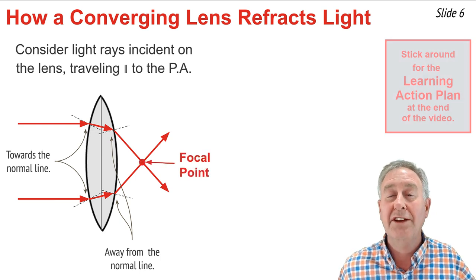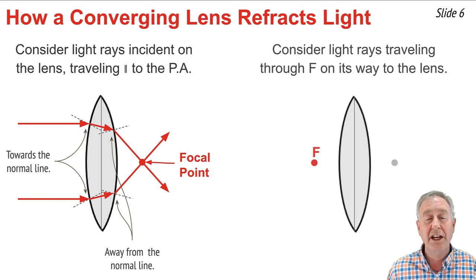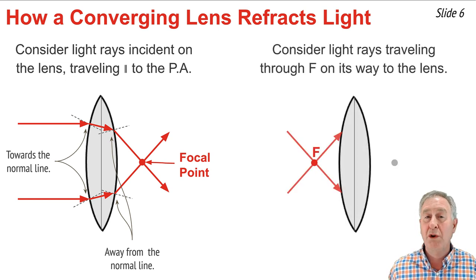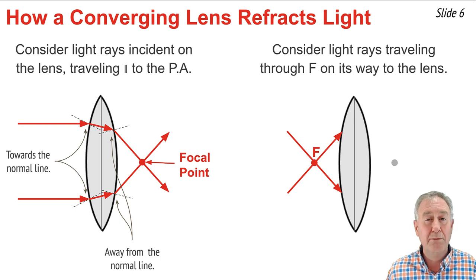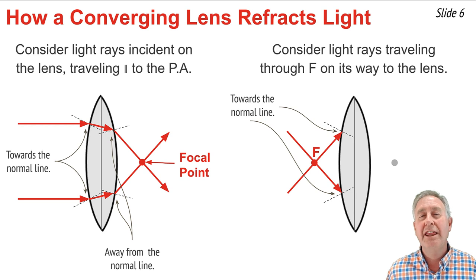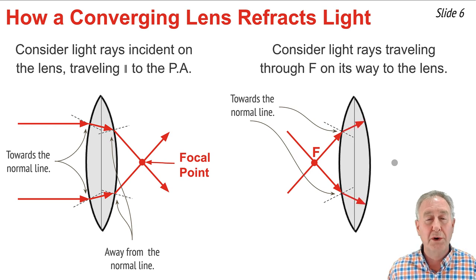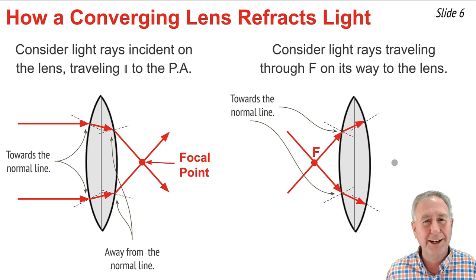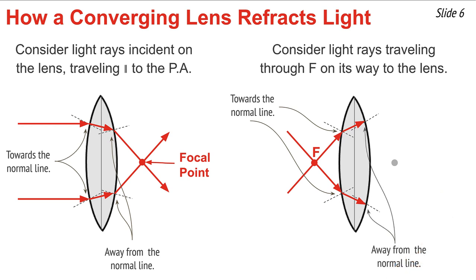Now let's consider the same converging glass lens, but with incident rays that are traveling through a focal point on the way to the lens. The normal line can be sketched at the point where these rays reach the lens surface, and we would expect the light to refract towards that normal line. It would pass through the lens and reach the opposite surface, where the normal line can be sketched perpendicular to the surface. The light will refract away from that normal line and will end up emerging from the lens traveling parallel to the principal axis.